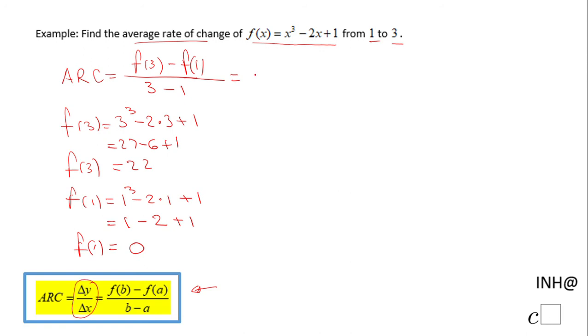So now we can go back here. F(1) is 0, and we can go back here and we have f(3) that is 22 - 0 (f of 1) over 3 - 1. So we end up here with 22 over 2, which is going to be 11.